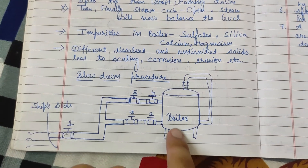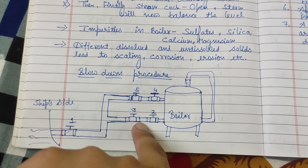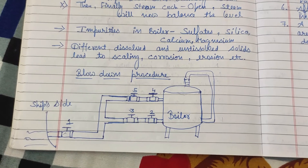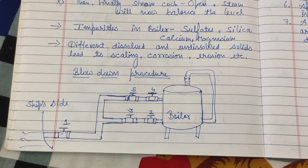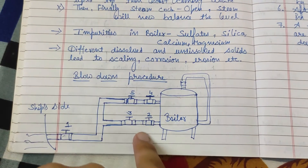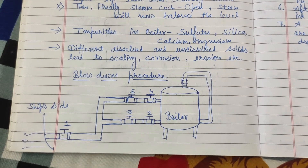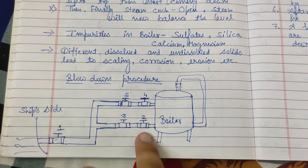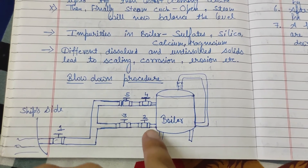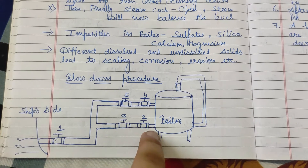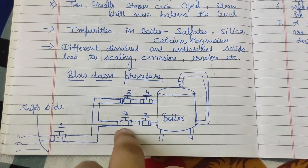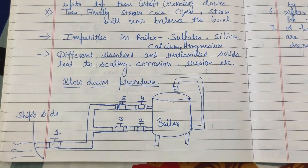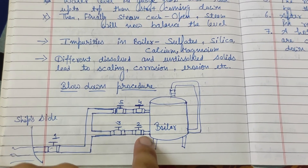With high-pressure, high-temperature water coming through, we open the third valve only by a crack opening to control the amount of water going overboard. We use crack opening on this valve because the pressurized water damages the valve seat. This is our primary valve and we don't want it damaged, so we open the second valve fully and only crack-open the third valve to control the flow.